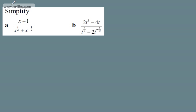In this video, we're going to do some extension questions on the rules of indices. We're asked to simplify A and B. So let's start with A. In the numerator we've got x plus 1, and in the denominator we've got x to the half plus x to the minus 1 half.